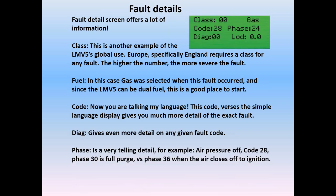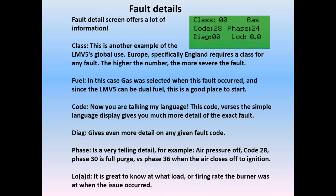Phase is very telling. For example, air pressure off, code 28 — if it was phase 30, we'd have been in full purge, which clearly means the air pressure switch was not connected in any fashion and never makes even when we're in full purge. However, if we had a fault when it went to phase 36, then we know the air pressure switch would have failed when the air damper was driving down to ignition position. That simply means the air pressure setting needs to be adjusted to maintain the air pressure switch even when airflow is reduced for the ignition light off. We also get a load indication so we know what load or firing rate the burner was at when the issue occurred, which also helps diagnose the problem.